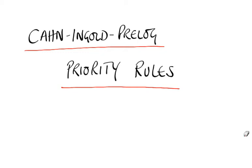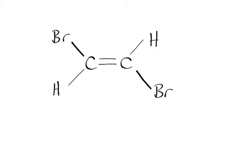Let's try and make sense of the Cahn-Ingold-Prelog Priority Rules for naming alkenes. We'll start off with a very simple example.